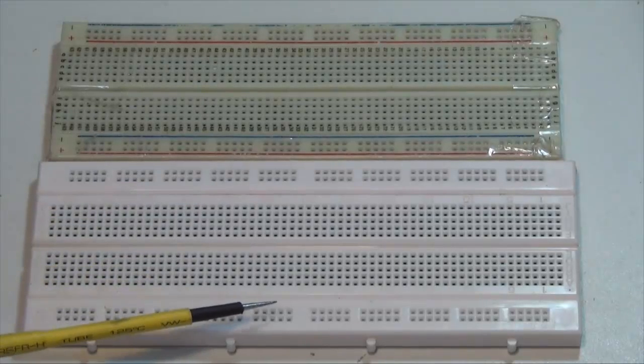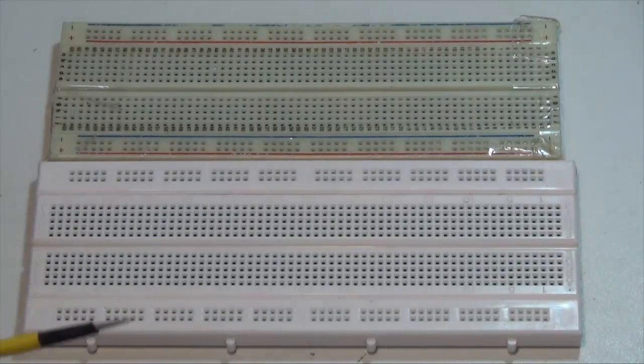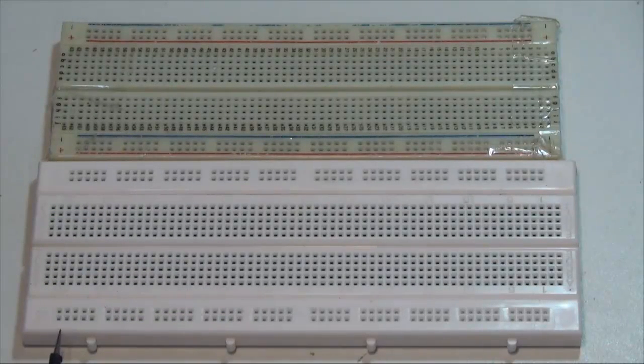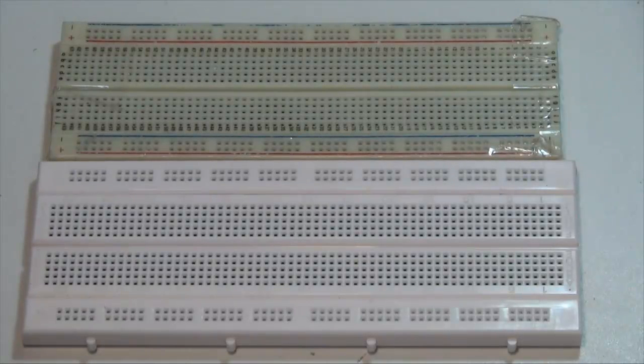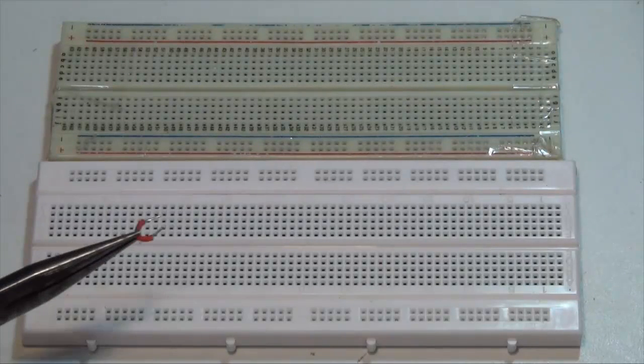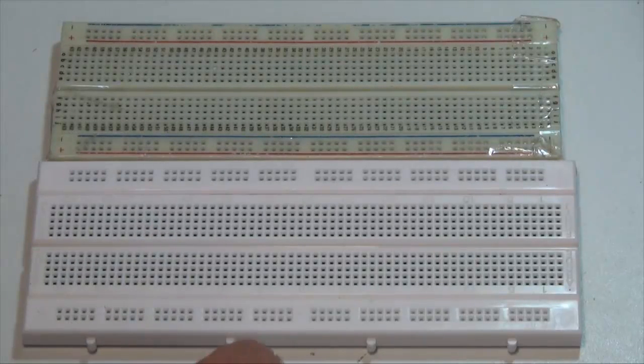And that will be the same on this end of the board. So if you want to make a solid connection straight across the horizontal plane of the board, what you can do is you can actually cut some little chunks of wire, like this, and insert them into the board.